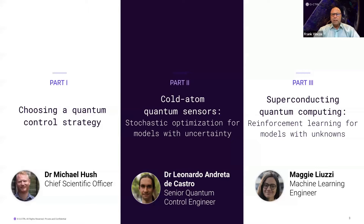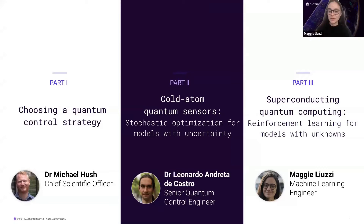Maggie Liuzzi is a machine learning engineer here at Q-Control. Maggie holds a master's in software development from University of Technology at Sydney, where she researched the application of deep learning techniques in the field of robotics. Currently, Maggie is applying machine learning techniques and reinforcement learning to novel algorithms for quantum technologies, and she's looking forward to speaking about reinforcement learning when we have quantum models with unknowns.